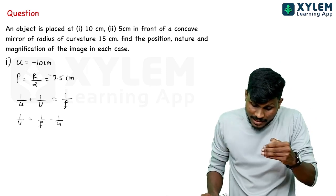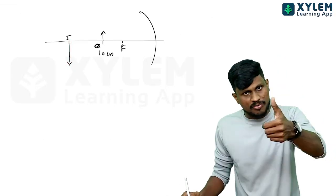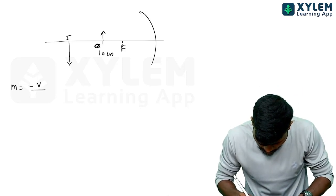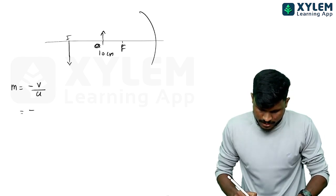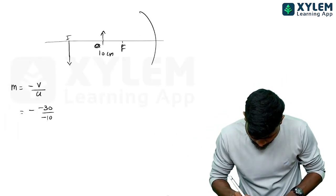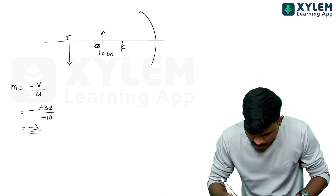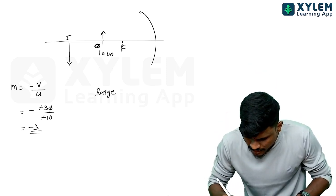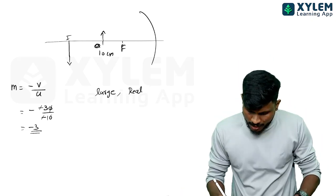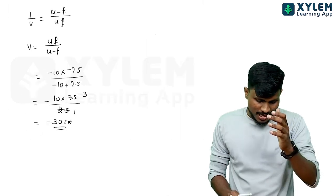The image is formed in front of the mirror. It is inverted. Magnification M equals minus v by u. With v equals minus 30 and u equals minus 10, magnification equals minus 3. So the image is real, inverted, and magnified.